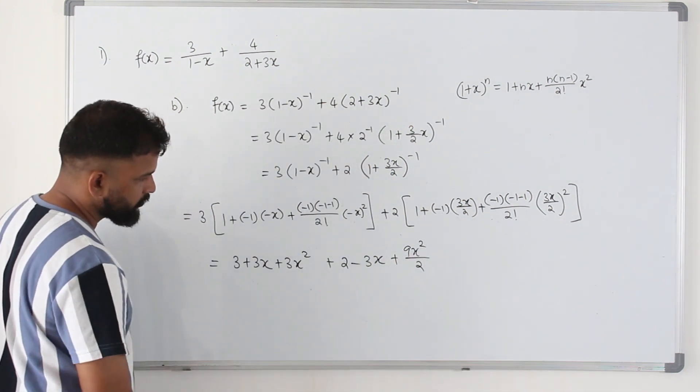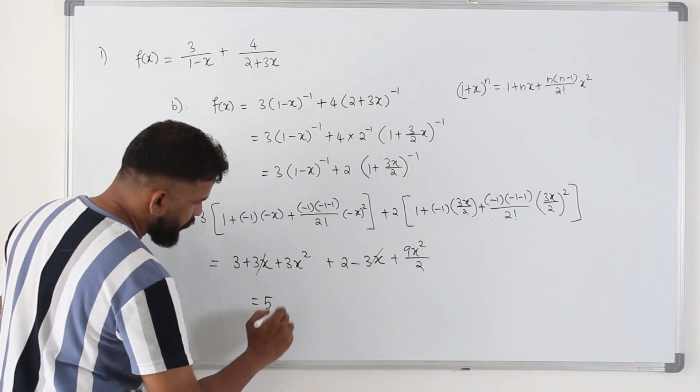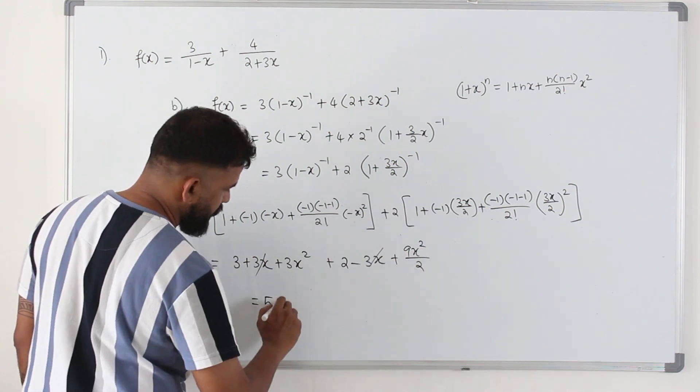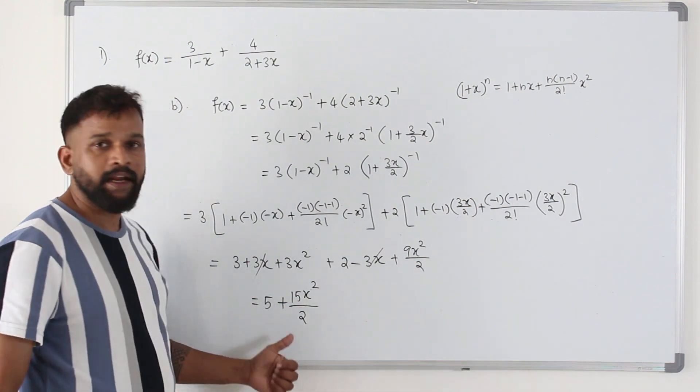And then simplify. These two can be cancelled. 3 plus 2 is 5. When you simplify these two, you will get 6x square, 15x square over 2. That's the binomial expansion.